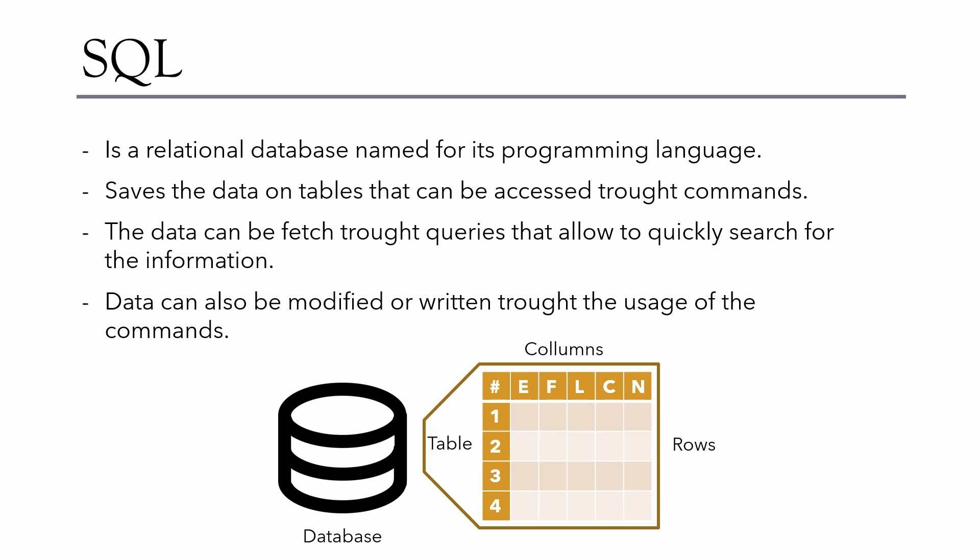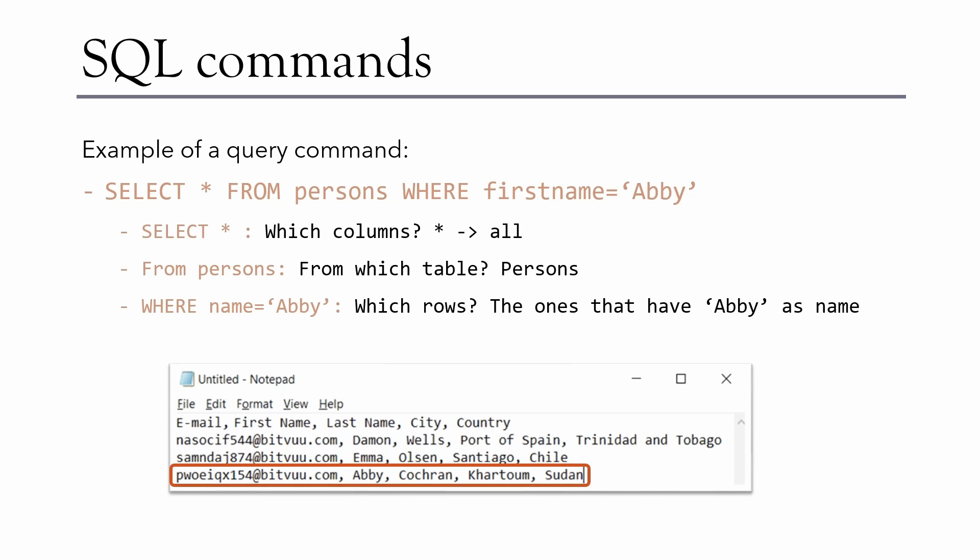Let's see how the commands work. Here we have a query command to get data. The command is: SELECT * FROM persons WHERE name = 'Abby'. The command starts with the columns — in this case we want all data related to the entry, so we use an asterisk, meaning we want all columns from the table 'persons' where the column 'name' is equal to 'Abby'. We then get all the information related to the rows where the name matches what we searched.